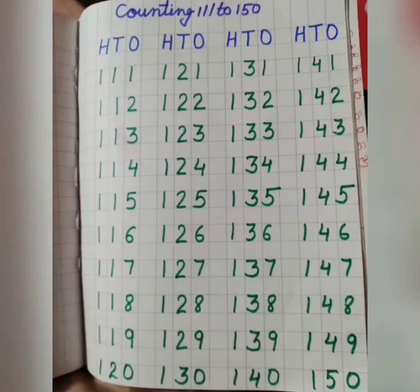So bacho, aapki jo counting hai woh one hundred fifty tak hai. Aapko bol bol kar likhna hai — loud bolna hai aur tab likhna hai. Do this work neat and clean, use full box and leave one box also. Okay bacho, bye! Thank you so much, take care.